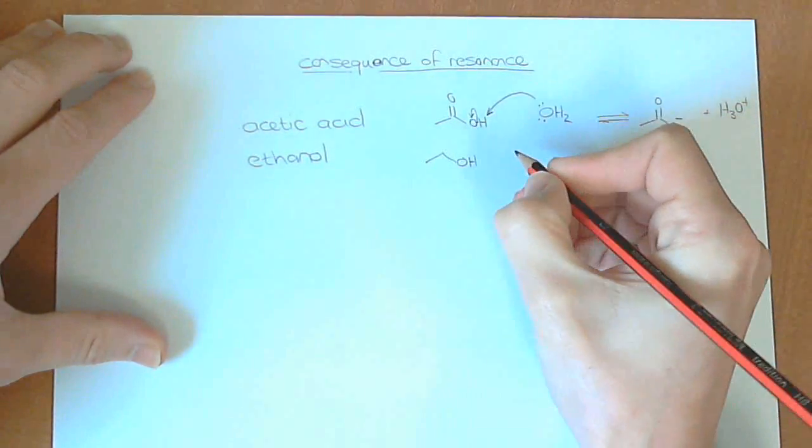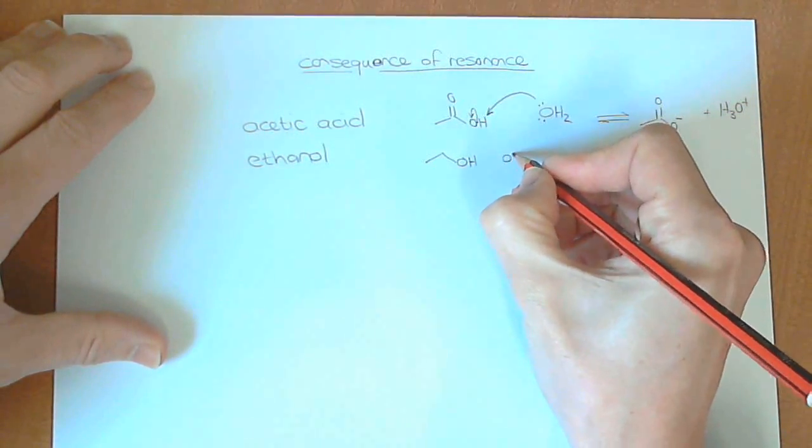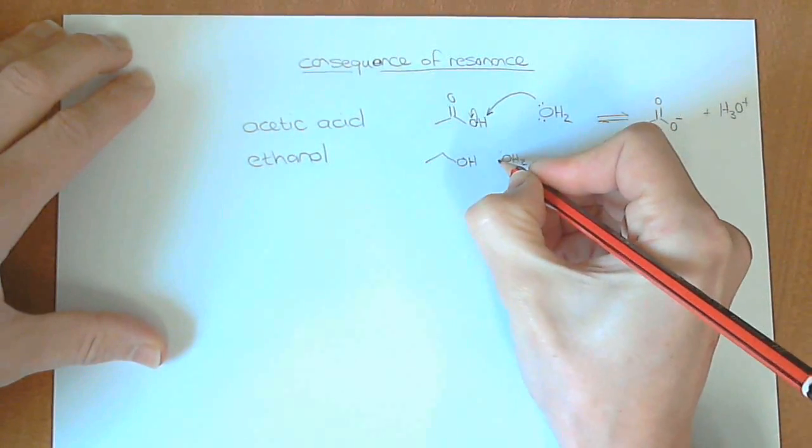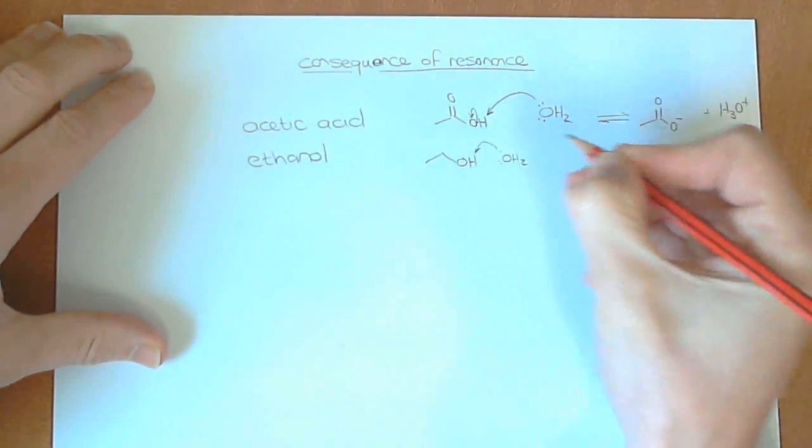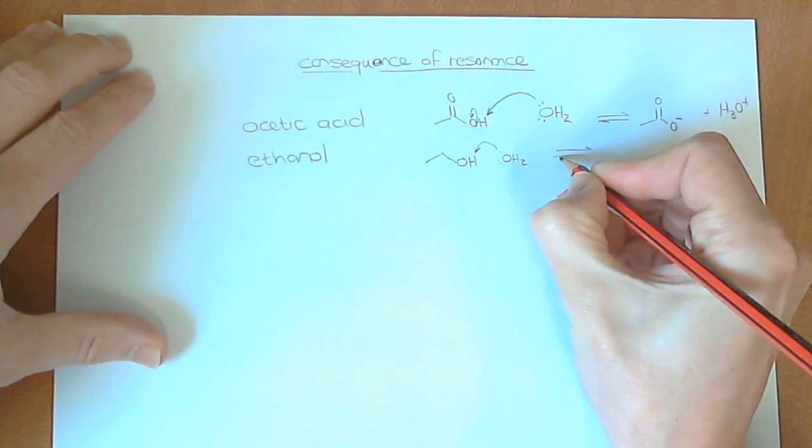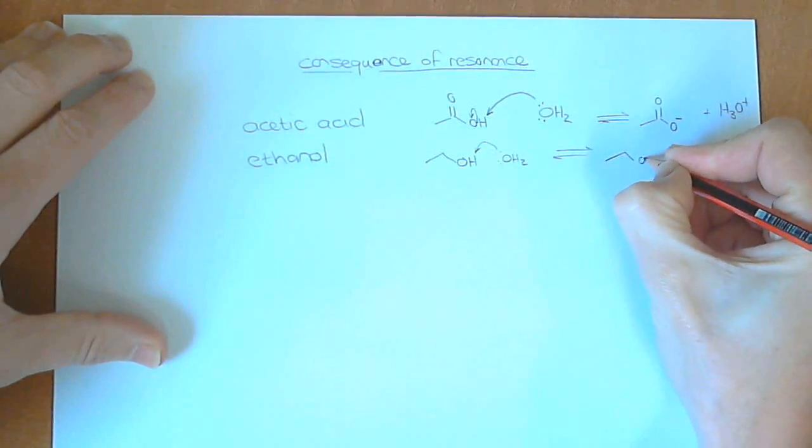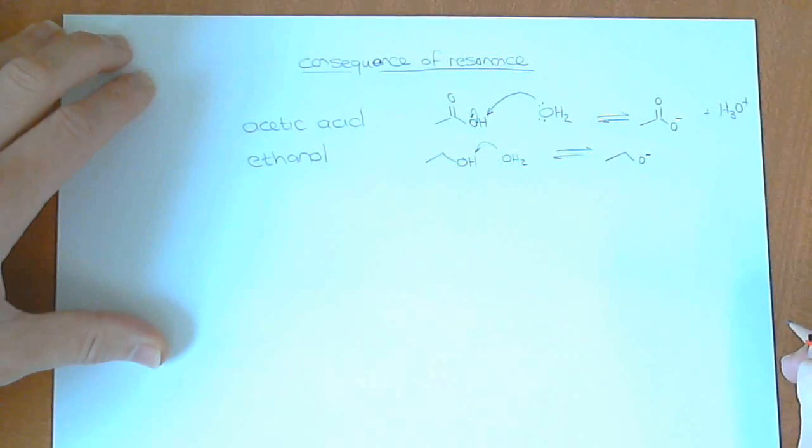With ethanol, if we had to do the same thing, showing this happen, we have water, and we draw out this equilibrium, we would get this product over here, an alkoxide, plus H3O+.